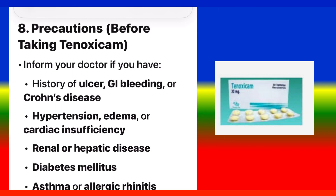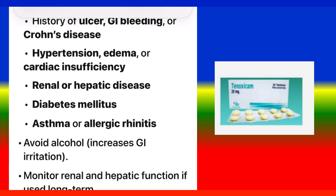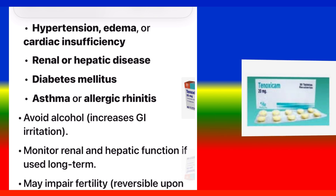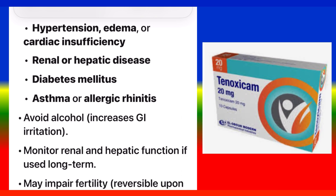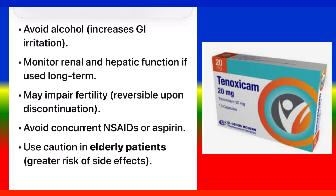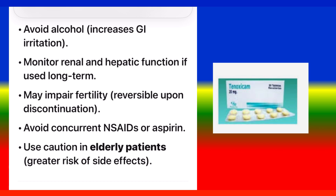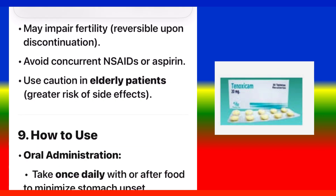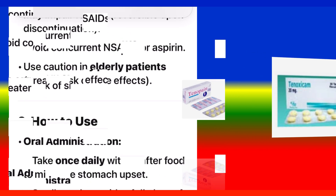Precautions: Inform your doctor if you have a history of ulcer, GI bleeding, or Crohn's disease; hypertension, edema, or cardiac insufficiency; renal or hepatic disease; diabetes mellitus; or asthma or allergic rhinitis. Avoid alcohol as it increases GI irritation. Monitor renal and hepatic function if used long term. May impair fertility, reversible upon discontinuation. Avoid concurrent NSAIDs or aspirin. Use caution in elderly patients due to greater risk of side effects.